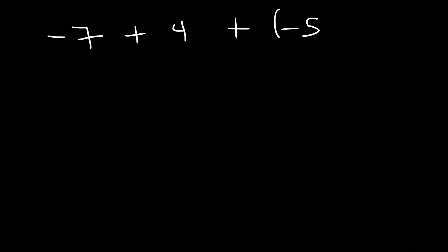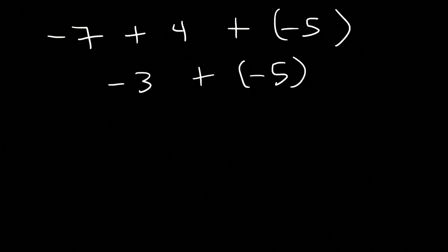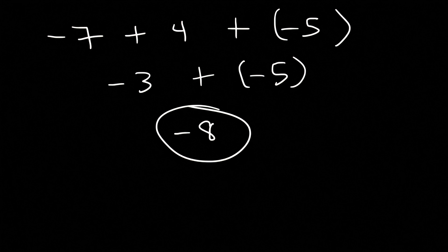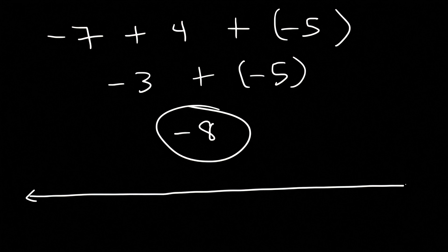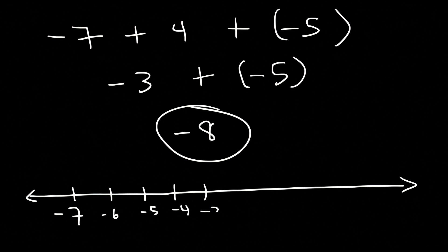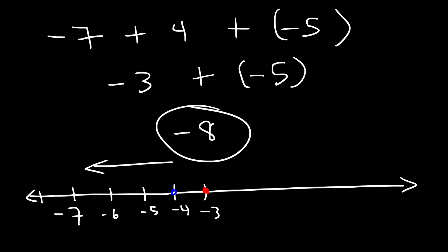Here's another example: what's negative 7 plus 4 plus negative 5? Negative 7 plus 4 is negative 3. Then negative 3 plus negative 5: when adding two negatives, you get a negative result — 3 plus 5 is 8, so it's negative 8. On the number line: start at negative 7, travel 4 right to reach negative 3, then travel 5 left to reach negative 8.